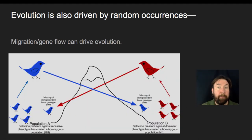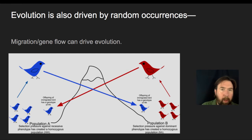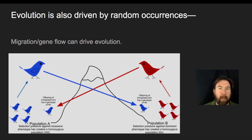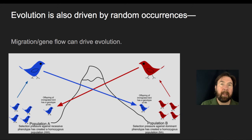Gene flow also can drive evolution. If two groups get separated by a barrier and genes can no longer flow back and forth, the forces acting on those two separated populations will lead them to evolve independently. If gene flow can occur between them, they may stay as one large population with gene contributions back and forth. But if you break the migratory pattern, you break gene flow, and over time those two populations may become unique and distinct because of different selective pressures and the random initial gene pools they started with in those two locations.